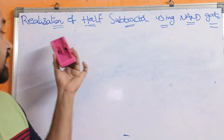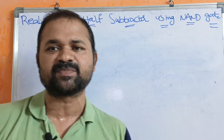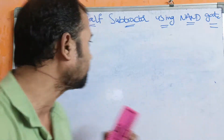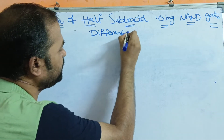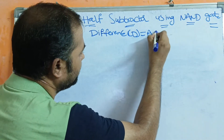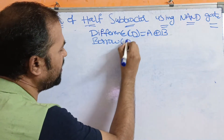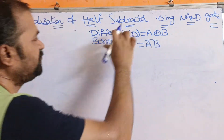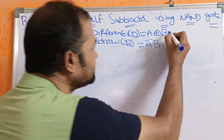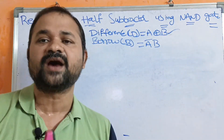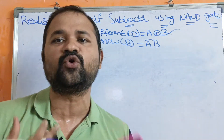Let us discuss the realization or implementation of a half subtractor using NAND gates. We know the expressions for the half subtractor. The first expression is the difference D, which is equal to A XOR B. The next expression is borrow output B_out equal to Ā·B. Now we have to design the circuit for both difference and borrow using only NAND gates. To design the circuit for A XOR B, we require 4 NAND gates.